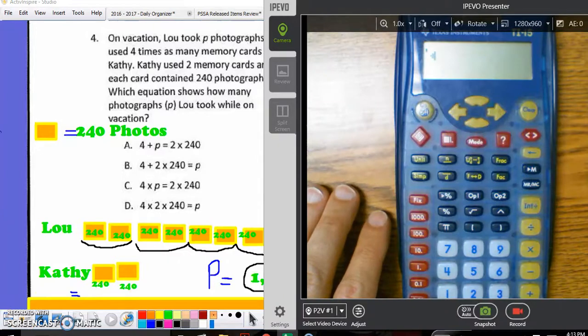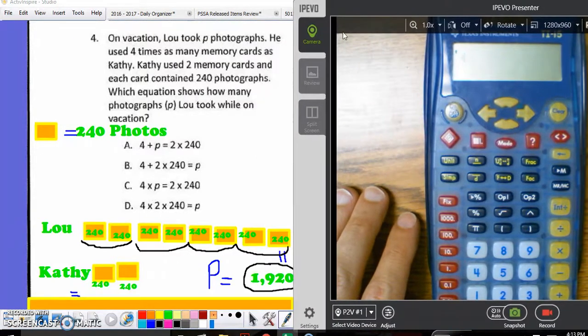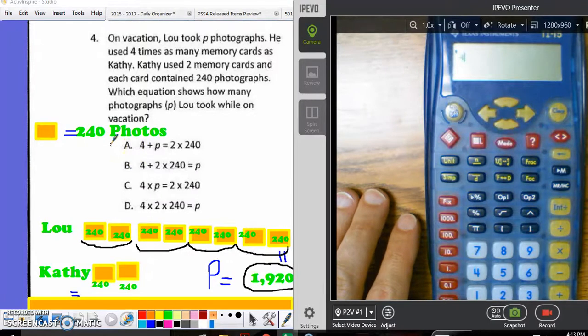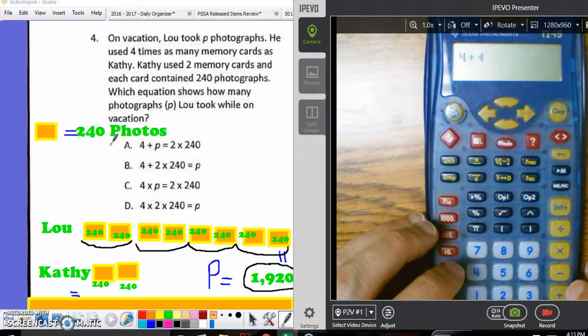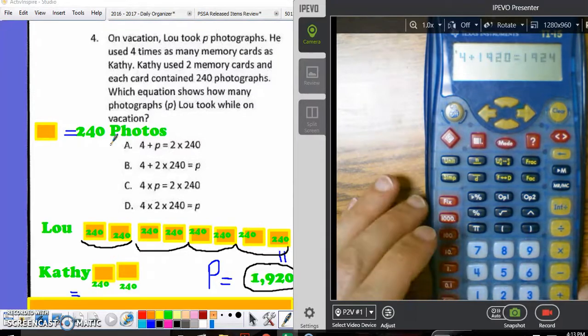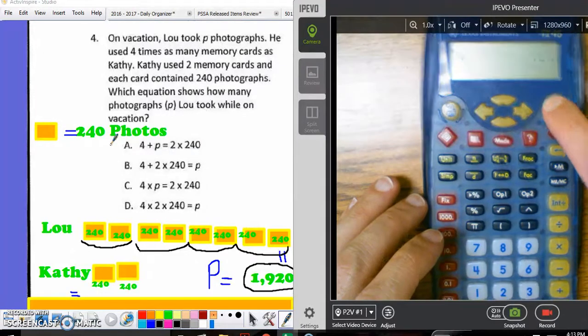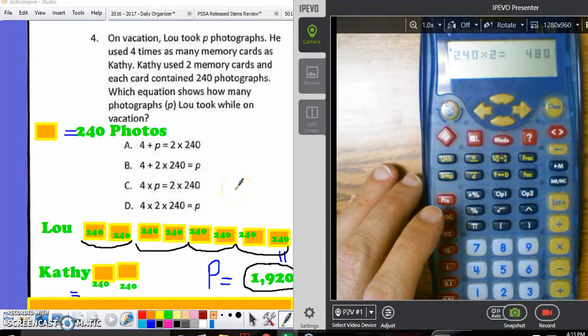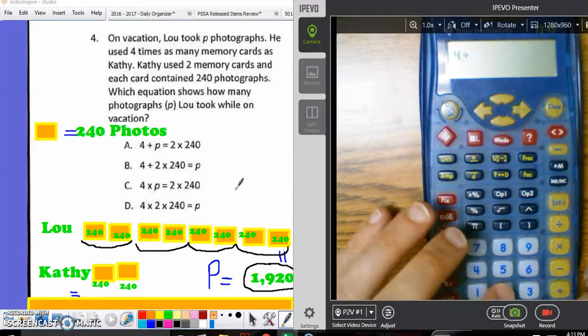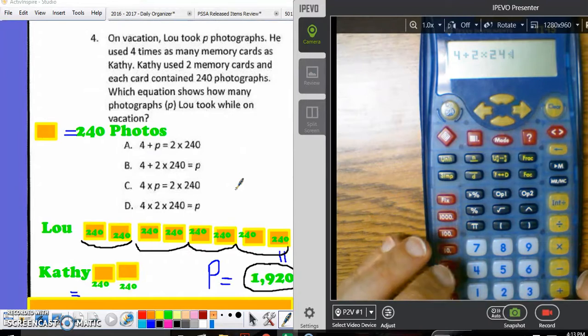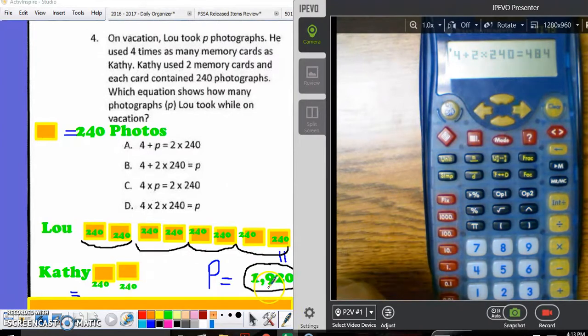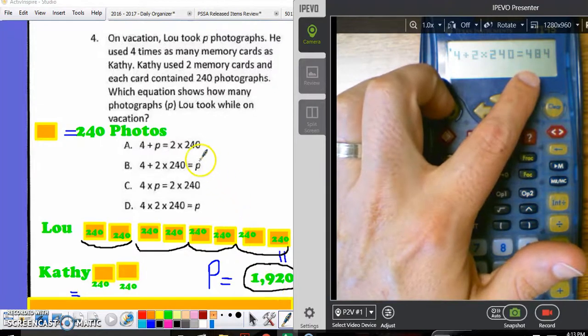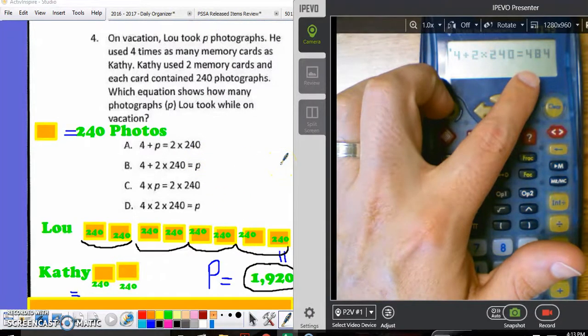So, let's try A first. And keep in mind that anytime I see the variable P, I'm going to replace it with 1920. So, A is telling me four plus 1920 equals two times 240. So, four plus 1920 needs to equal 1924. 240 times two does not equal that number. So, it cannot be A. B tells me four plus two times 240 needs to equal P. Well, we know that P equals 1,920. And when I plugged B into this equation, I get 484, which is not the answer. So, we move down to C.